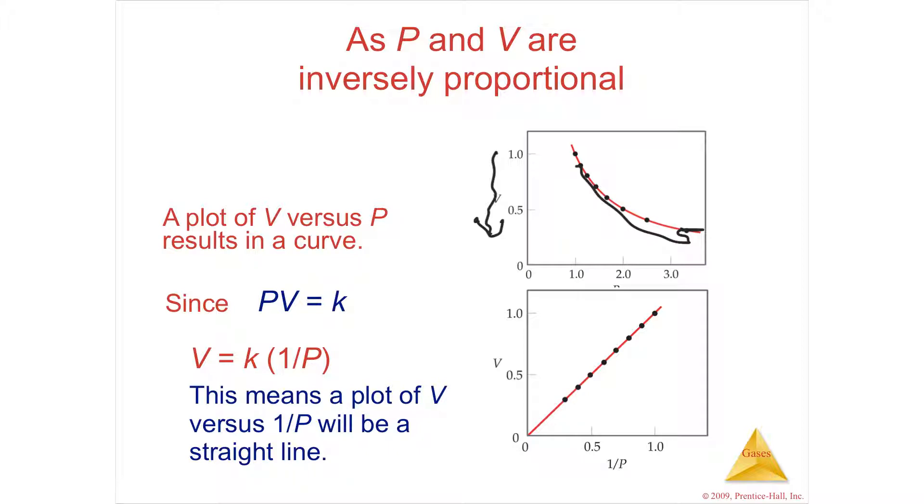You can have a straight line if you do one over pressure. Okay, so one over pressure is going to go up because that's inverted. But as volume goes up, the one over pressure goes up. As volume goes up, the pressure goes down. Okay, so that's the relationship. It's inverse. So PV equals some kind of constant. That was what Boyle found.